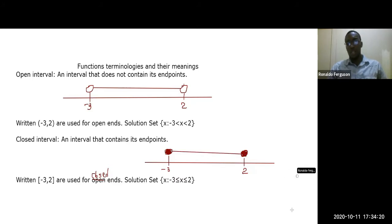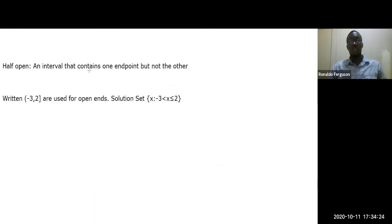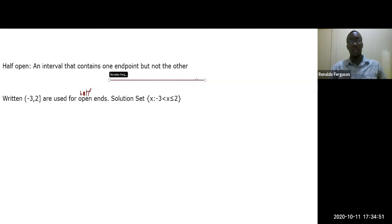A half-open interval contains one endpoint but not the other. For example, using the notation negative three comma two with one closed bracket and one open bracket. On the number line, you shade the closed end and leave the other end open, then connect them with a line. This represents a half-open interval.